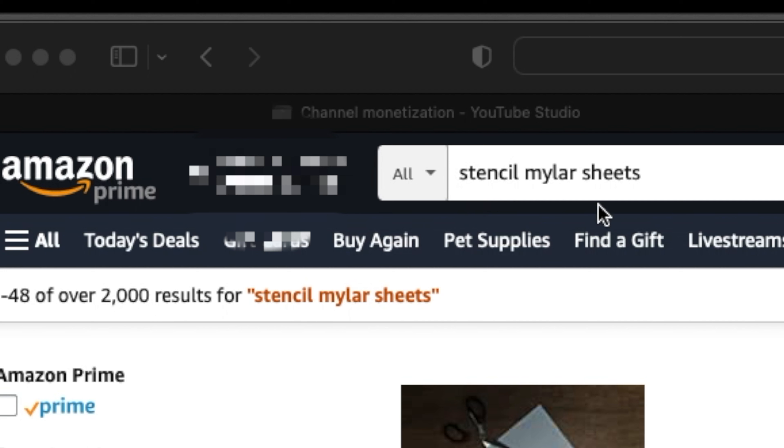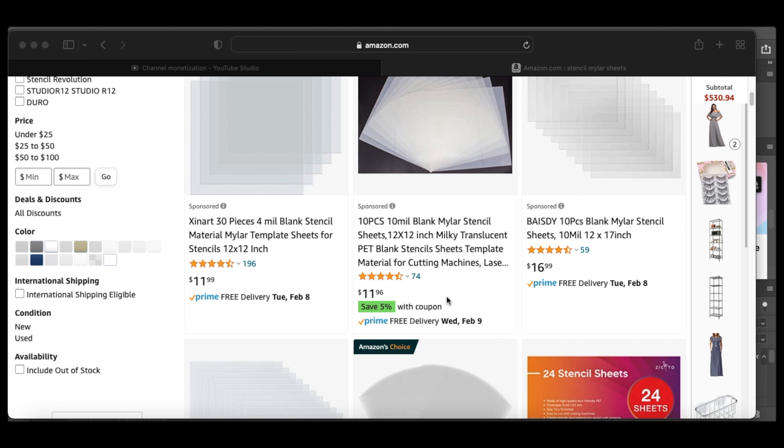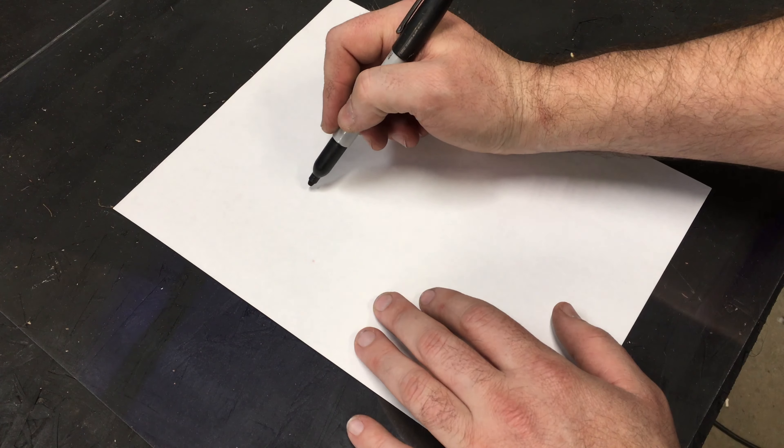You also need some stencil sheets. You can get this also on Amazon. This varies from $10 to $20 depending on the thickness and how many you need. The thicker the stencil, the harder it is to burn through, but it's also more durable and will last longer.